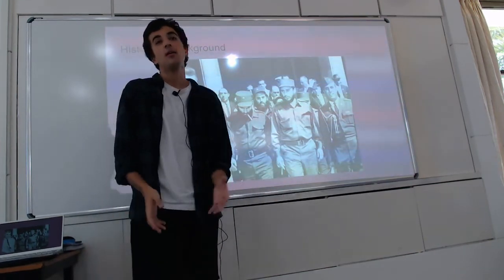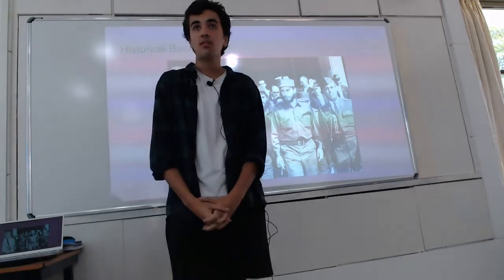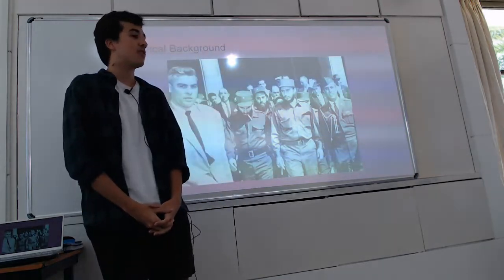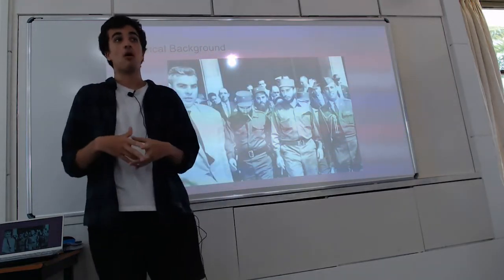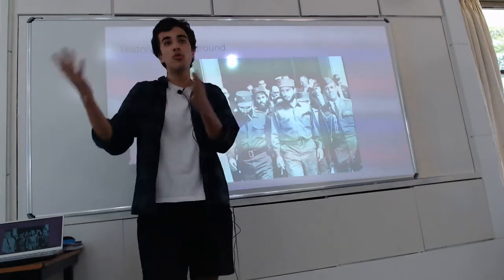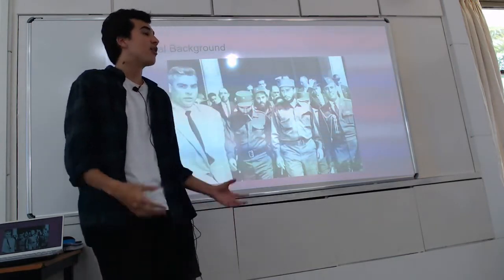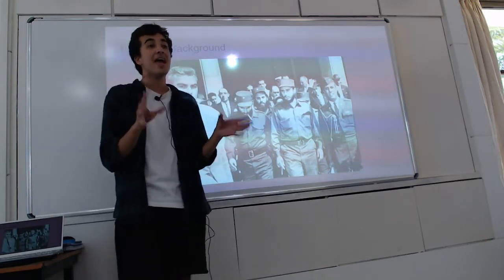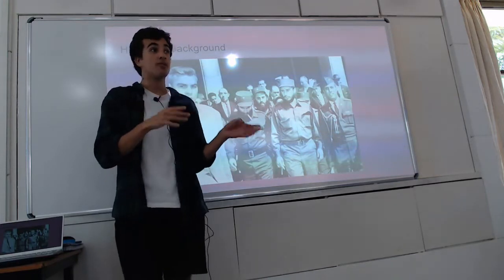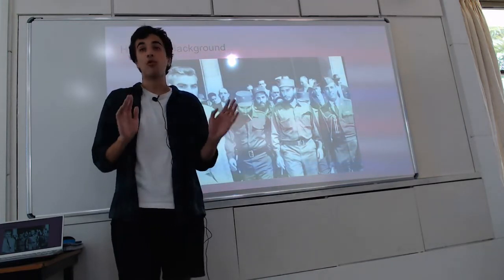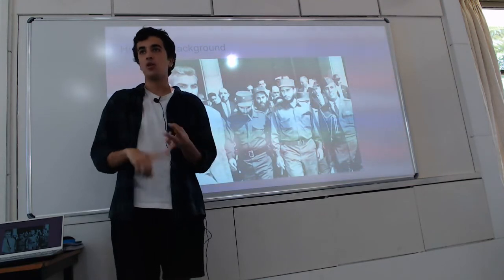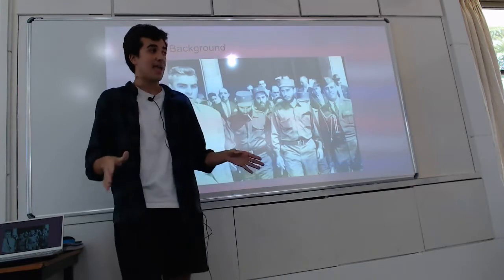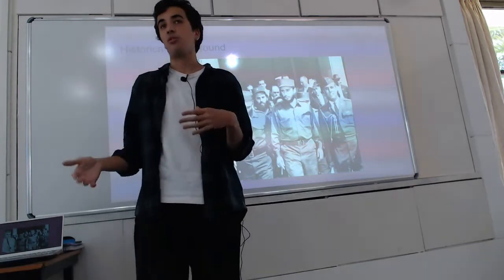In 1959, the Cuban Revolution took place and Cuba became the first communist country in the Americas. Because of that, the U.S. was very threatened by the presence of a state allied to the Soviet Union so close to home. They started having a policy of intervening more and more in Latin American countries. Basically, every Latin American country has had a dictator that was implemented by the U.S. — except for Costa Rica. So Brazil, Argentina, Uruguay, Nicaragua, Honduras — every country in Latin America has had, at some point, a dictator established by the U.S.